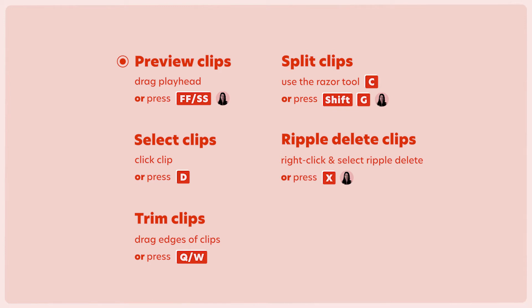I also want you to practice selecting clips, which you can do by clicking a clip with your mouse, or you can press the D key, which will select clips under your playhead. You're also going to want to practice trimming clips on the timeline, which you can do by dragging out or in the edges of a clip with your mouse.